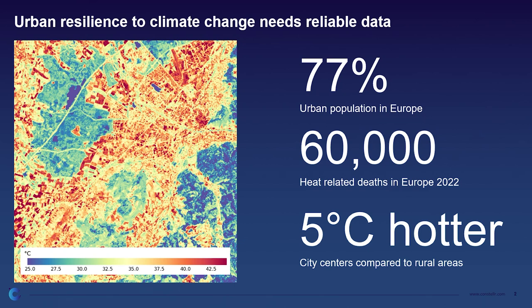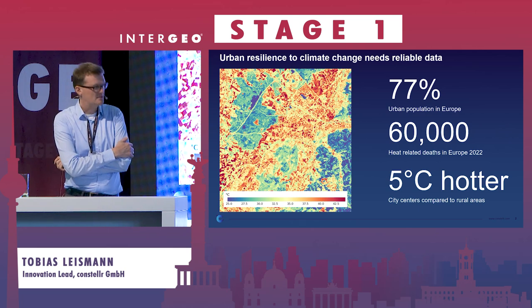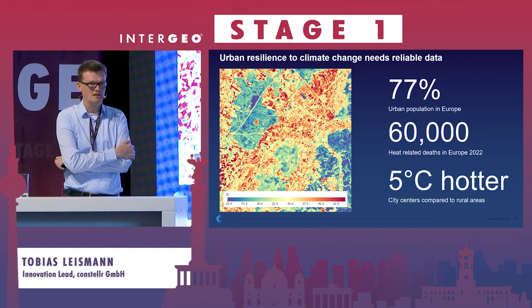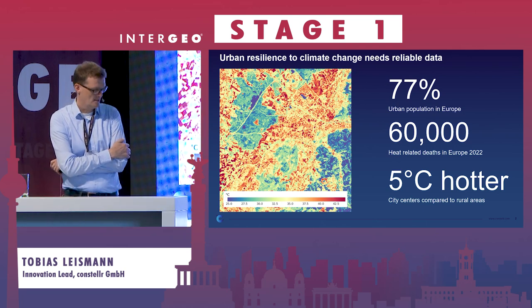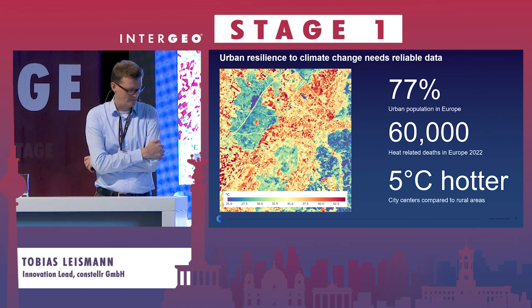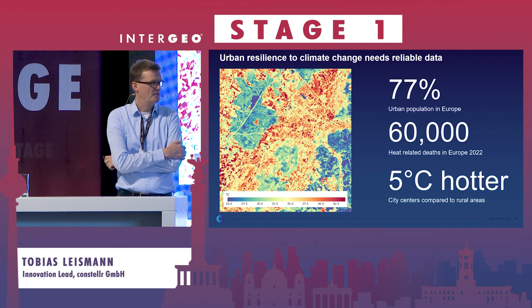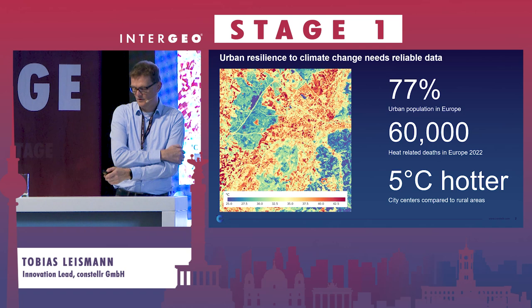The urban population in Germany and Europe is 77%, so in Germany it's a bit less, but it's still a lot. Last year we had 60,000 heat-related deaths in Europe, most of them in cities, because we have these so-called tropical nights from urban heat islands where people already had serious problems. City centers are on average 5% hotter than the surrounding areas, and a lot needs to be done about this.